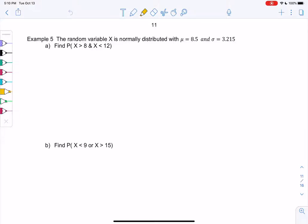Section 6.3, example 5. So a random variable is normally distributed. So again, immediately I think of that normal curve.